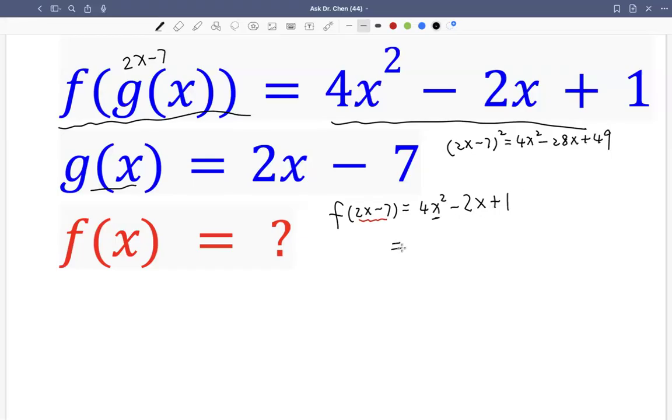So we want to write this as 2x minus 7 squared for the square term. And we have negative 2x, but here we have negative 28x. So we need to add back positive 26x. Now we only have positive 1, but here we have 49. So we minus 48 to get positive 1.